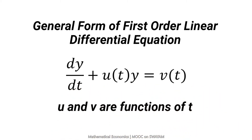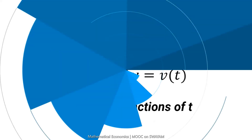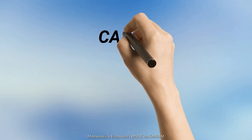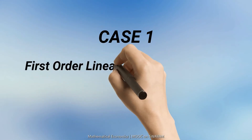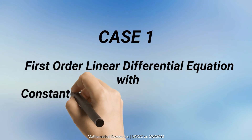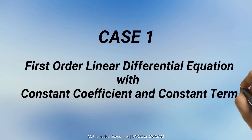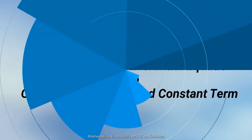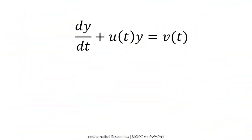We may have three cases. The first case may be a first-order linear differential equation with constant coefficient and constant term. Observe this differential equation again — u(t) and v are functions of t. If u(t) and v take constant values, then we have a first-order linear differential equation with constant coefficient and constant term.